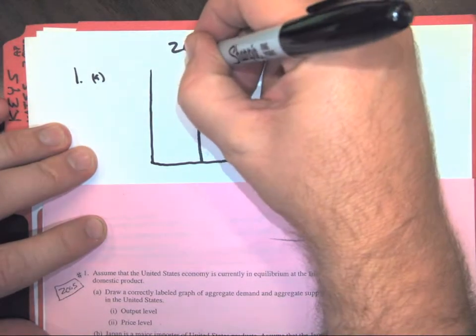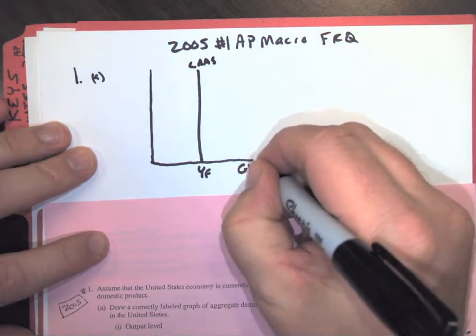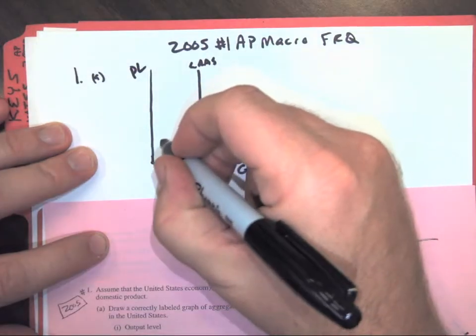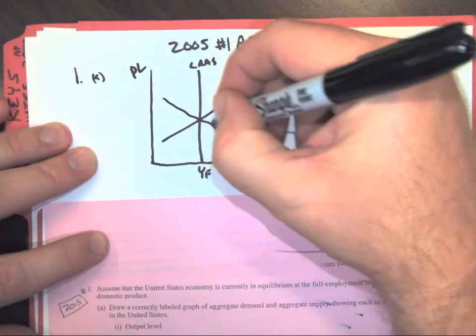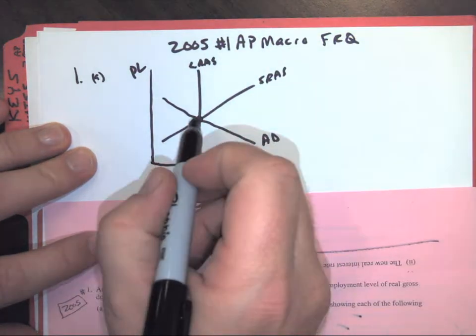So we start with our long run supply at full employment. This is labeled as real GDP. This is our price level. So you're going to have short run aggregate supply and aggregate demand crossing at long run supply. So that shows full employment.